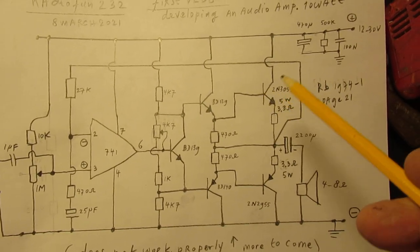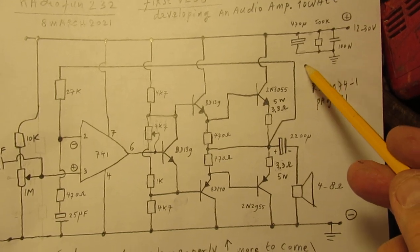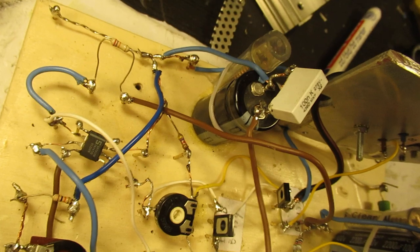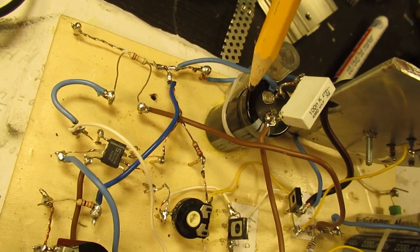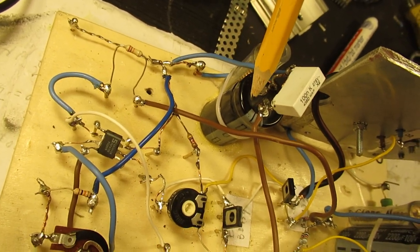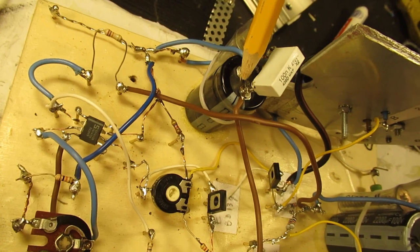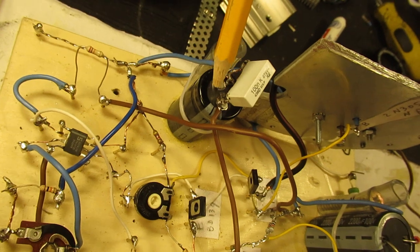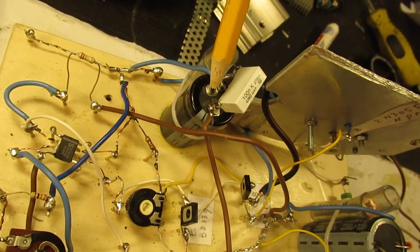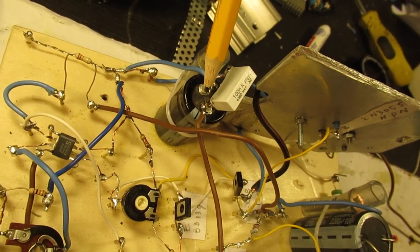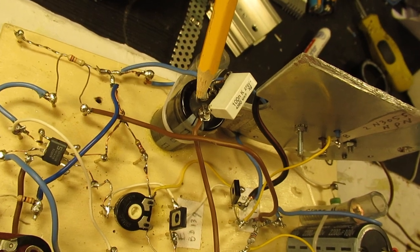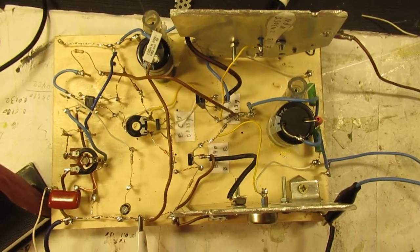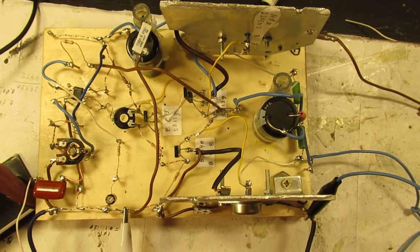This is the decoupling unit. Here it is in practice: 150 microfarad bridged with a 270k resistor and a 100 nanofarad capacitor. Always necessary to keep oscillations out of such a circuit.